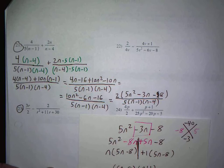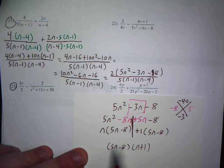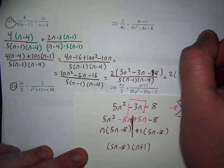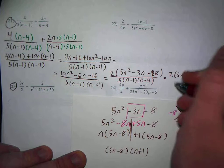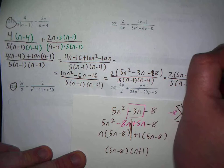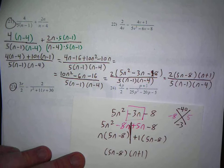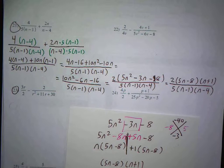Well, that's this factor, right? So to keep going, I get 2(5n minus 8)(n plus 1) all over 5(n minus 1)(n minus 4). Now, does anything cancel out? Well, that's an (n minus 1), that's an (n plus 1), so they do not cancel out.